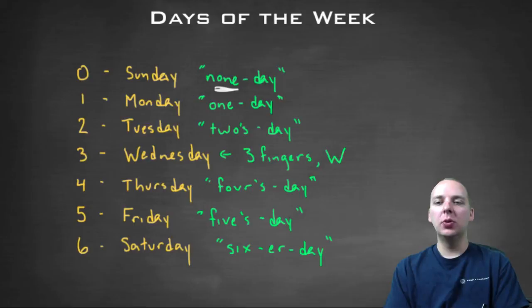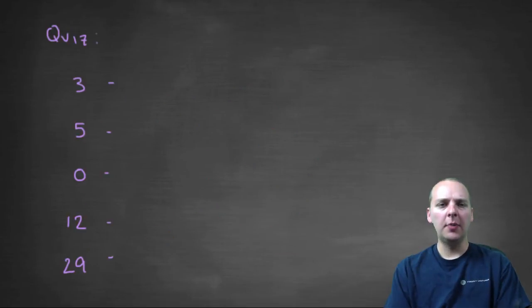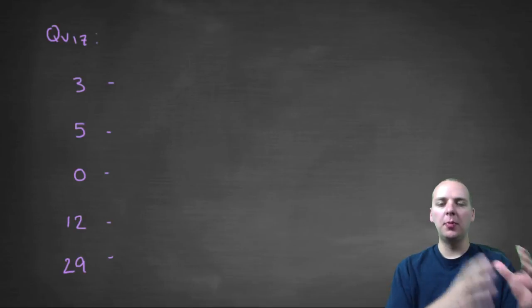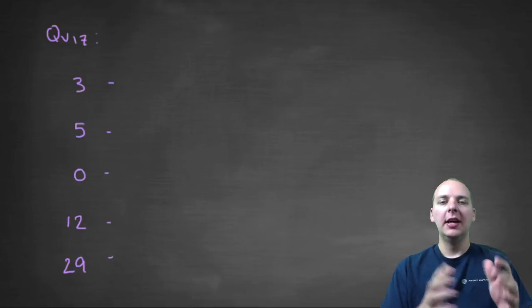So let's do a little quiz here real quick. Here's a quiz. If you did your algorithm, you did the sum of the month code and the day code and the year code, and you got the number three, what day would that be associated with? What day of the week would that be? That would be a Wednesday.